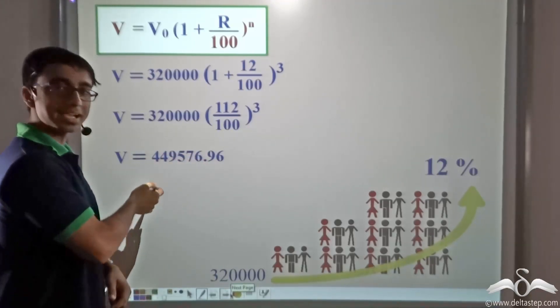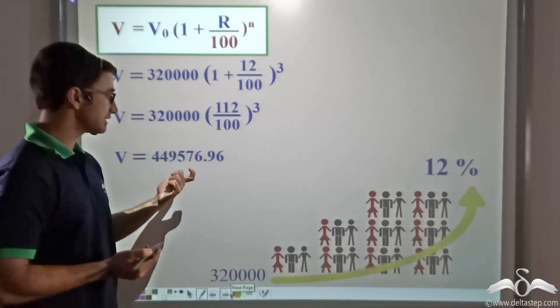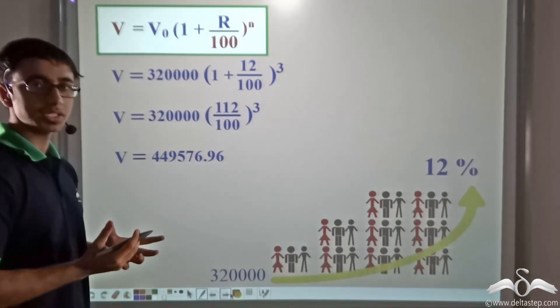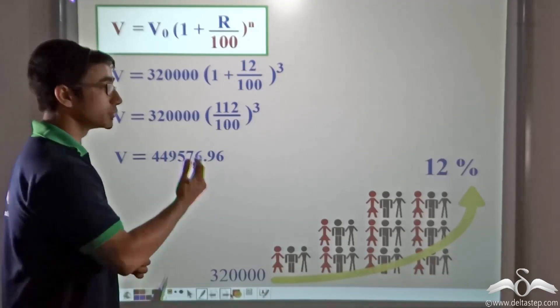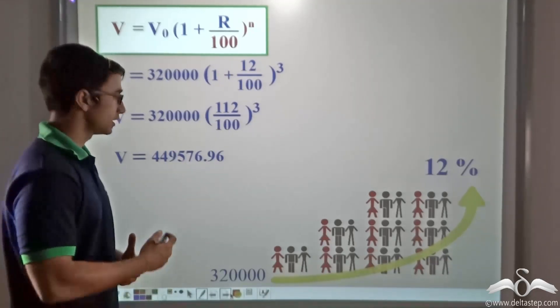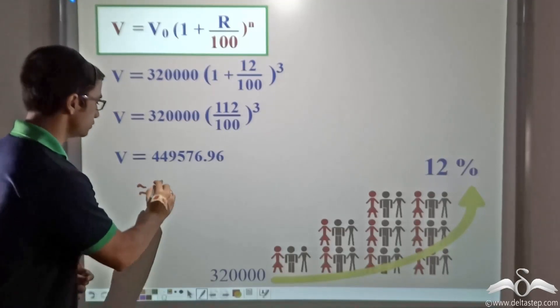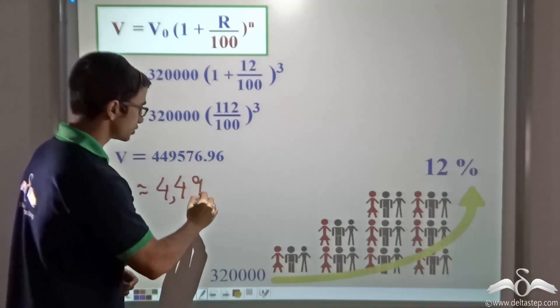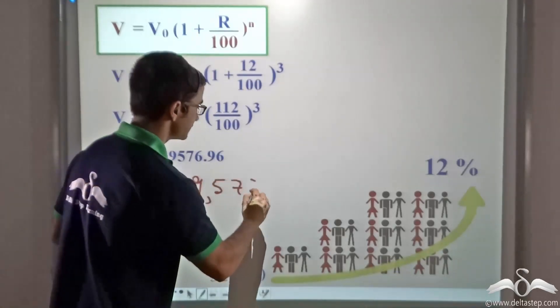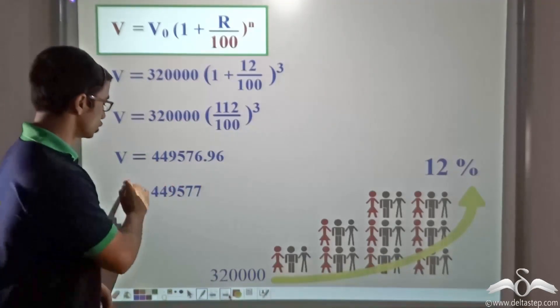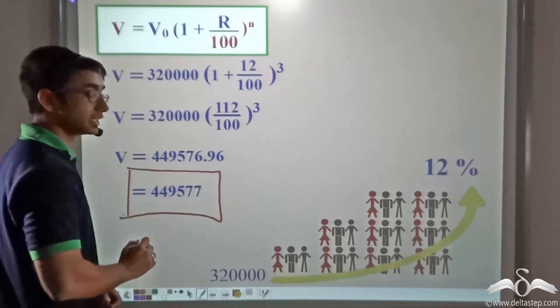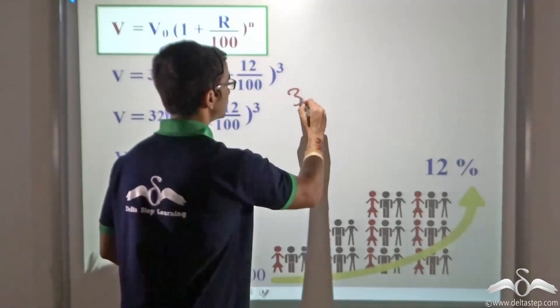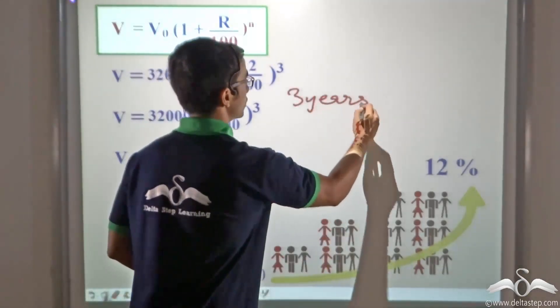Now obviously the population of a town cannot be a fraction. Why? Because a human being cannot exist as a fraction. So I round this value and I write 4,49,577. So this particular value is going to give me the population of the town after 3 years where the population grows at a rate of 12 percent.